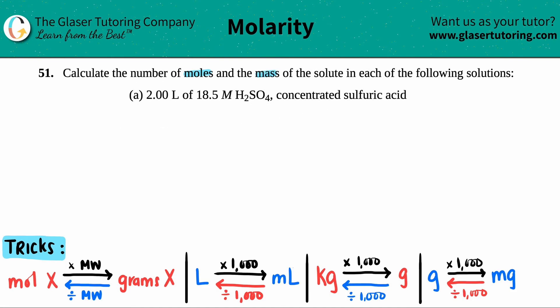So in this case, we have to find out the number of moles and the mass of the solute that's contained in two liters of 18.5 molarity sulfuric acid, which is H2SO4. They tell us that concentrated H2SO4.